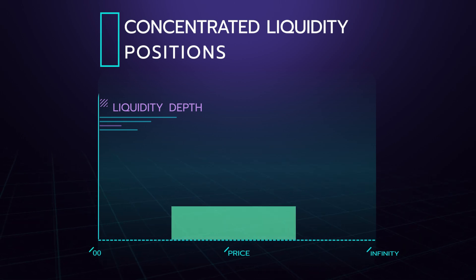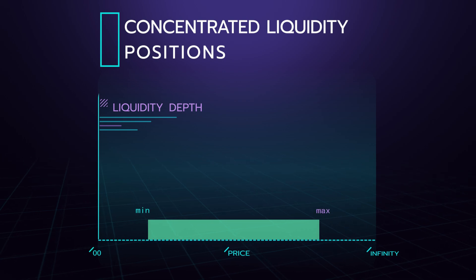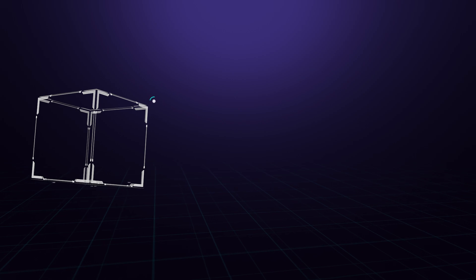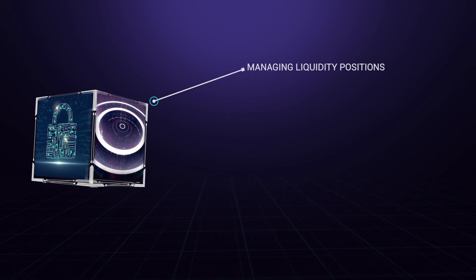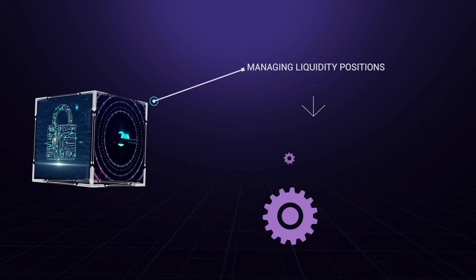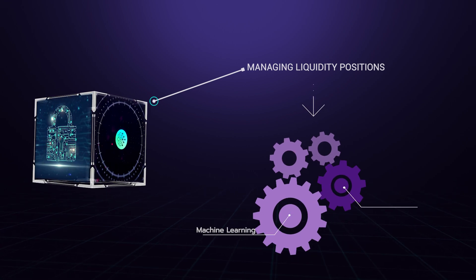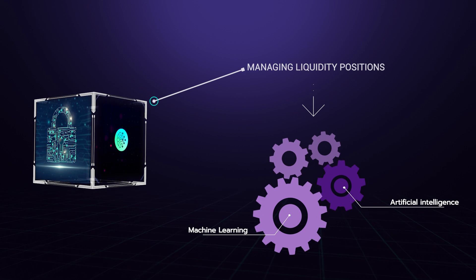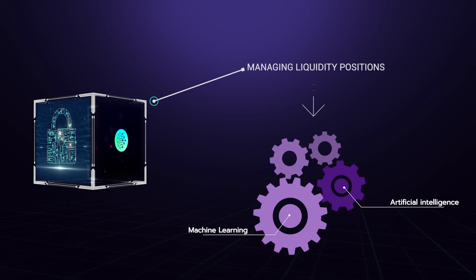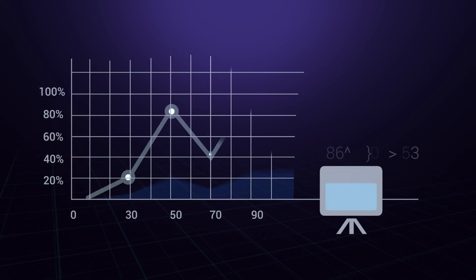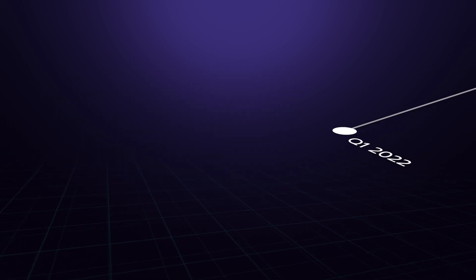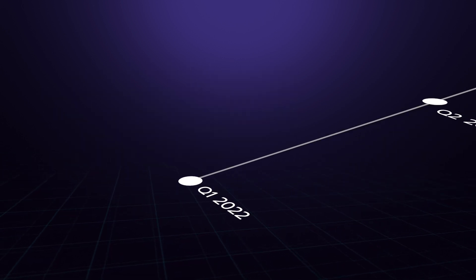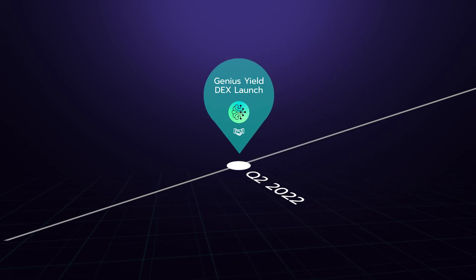This means the liquidity provider needs to play a much more active role that also requires an understanding of the market. But this is exactly why we are building the Smart Liquidity Vault, which can manage your liquidity positions for you using our own AI and machine learning algorithms. By using our Smart Liquidity Vault, all the active rebalancing required will be done for you.